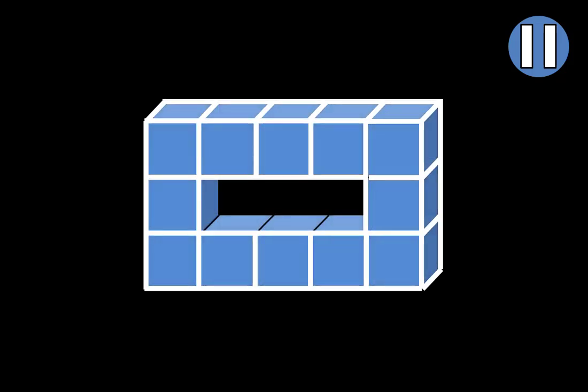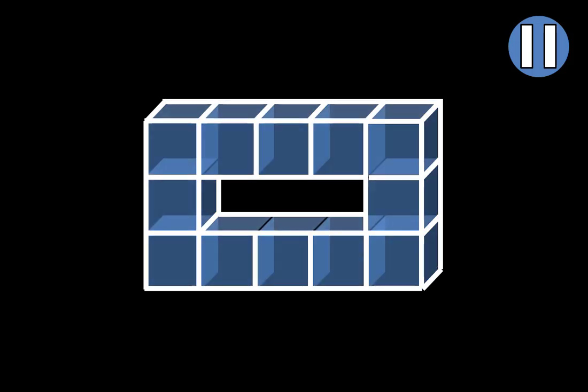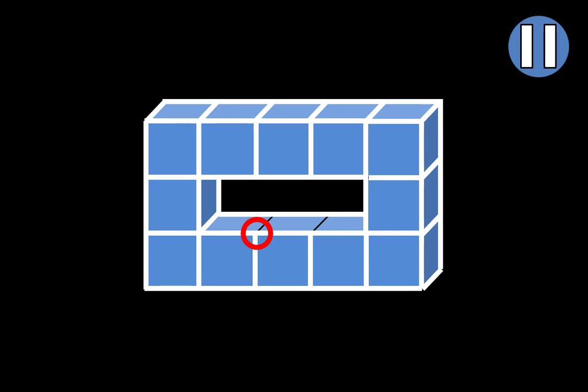Now let's complete the interior and then we will be finished. Draw a diagonal line from this corner, then draw a line straight across — notice where it will meet the cube. Now draw another diagonal line straight up and again notice where it will meet the cube. You can see that we are nearly finished. From this corner draw a diagonal line, and finally from this corner draw a diagonal line. And now the structure is complete.